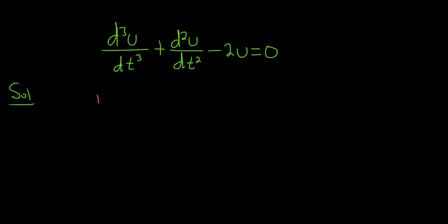Because we have a third derivative, we'll start by writing down m cubed plus, then we have the second derivative, so m squared, and then minus. And then whenever you have u, that's the zeroth derivative, so you could think of it as m to the 0, or just ignore it and just put the number, and this is equal to 0.